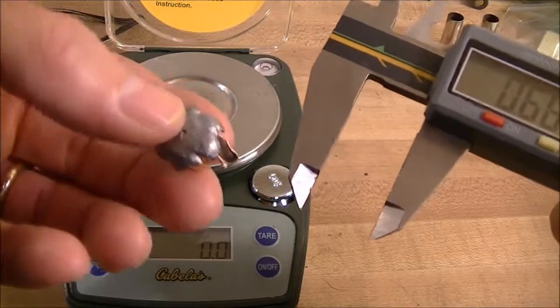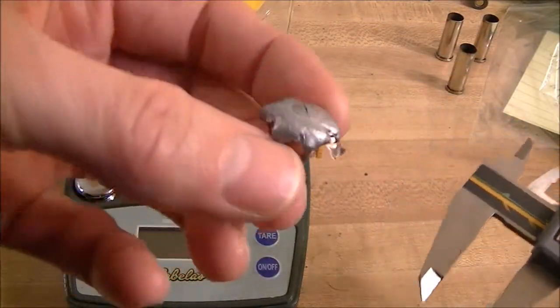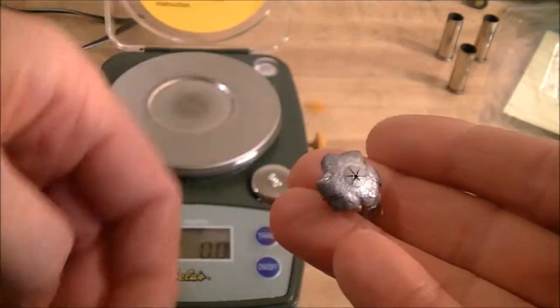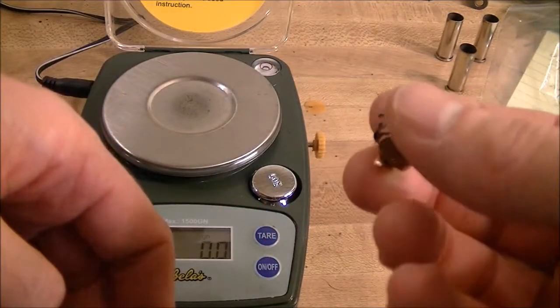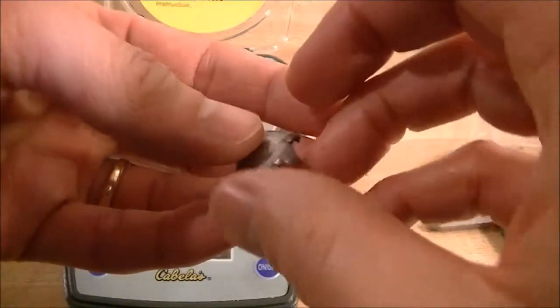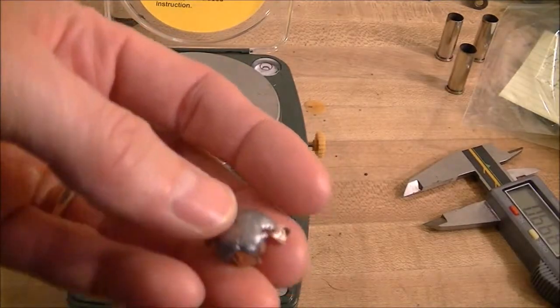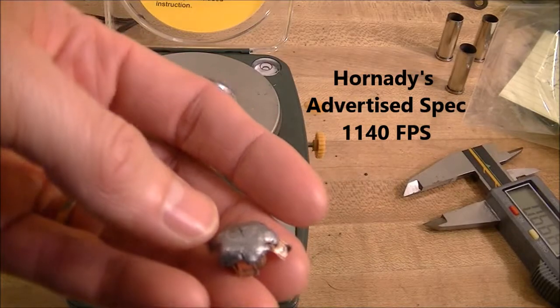So there we go. That is the Hornady Critical Defense out of an XDM, which is a 3.8 inch barrel. The velocity on that was 1188 feet per second.